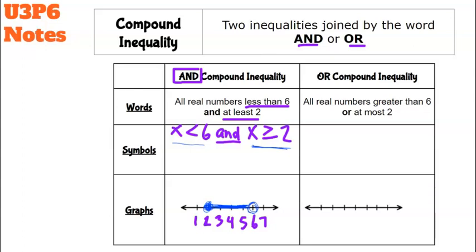Another way to write an AND inequality is with the variable x in the middle, the lower number on the left, the higher number on the right, and always using less-than symbols. We read it as 'x is between 2 and 6.' Add the line underneath the 2 to show the equal-to piece. You'll see AND inequalities written both ways.